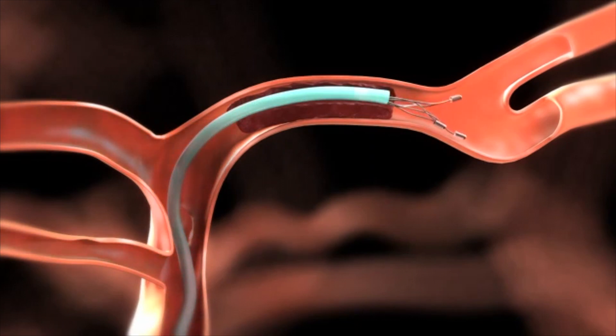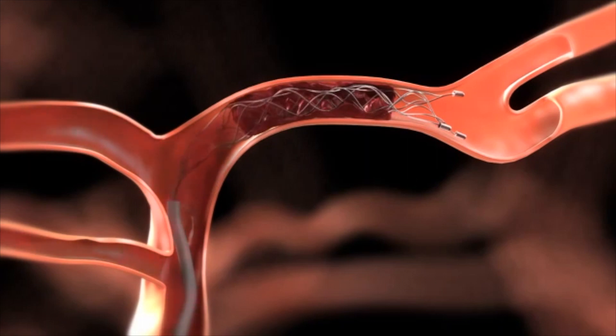The usable length of the deployed solitaire FR should extend past each side of the thrombus. Tighten the RHV around the micro catheter and angiographically assess the revascularization status of the treated vessel.